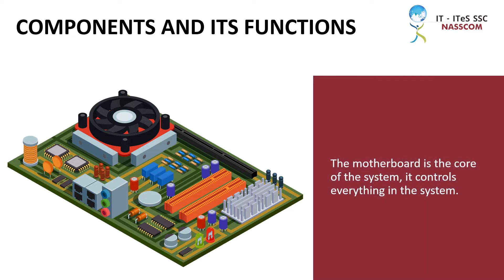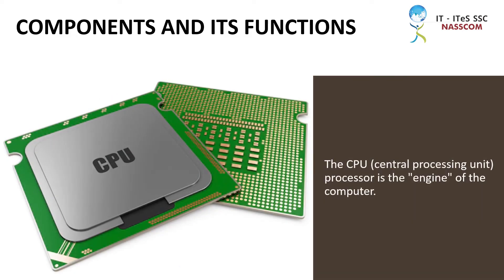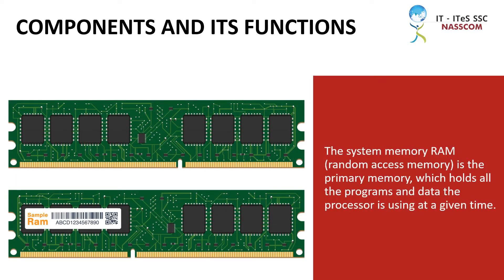The motherboard is the core of the system — it controls everything in the system. The CPU processor is the engine of the computer. The system memory RAM is the primary memory which holds all the programs and data the processor is using at a given time.